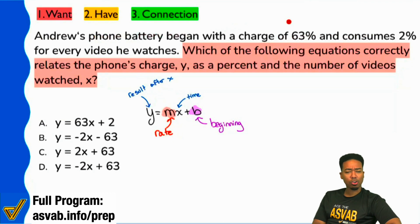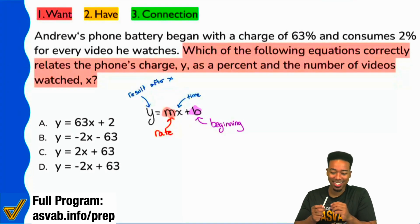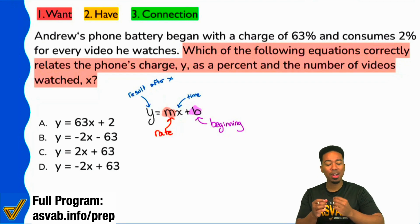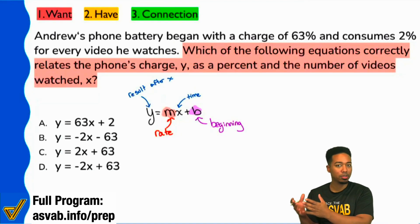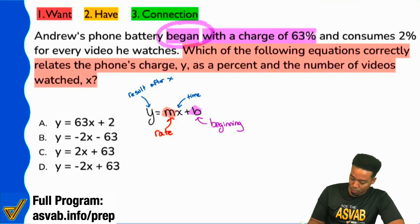Andrew's phone battery began with a charge of 63% and consumes 2% for every video he watches. That's a big hint. Anthony's phone battery began with a charge of 63%. Everybody, does this seem a lot easier now that you know what you're looking for? Does this seem a lot easier now that you know what your formula means? What the pieces mean? That's what practice helps you do. That's what actually learning and understanding material does versus just straight memorization. Let's go ahead and highlight that right here in purple. Began with a charge of 63%. I can say that that is right there, 63%.